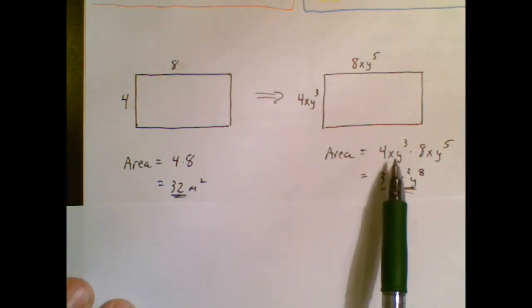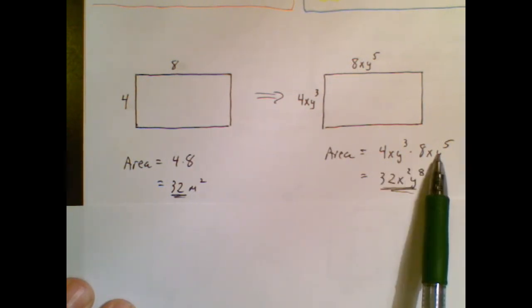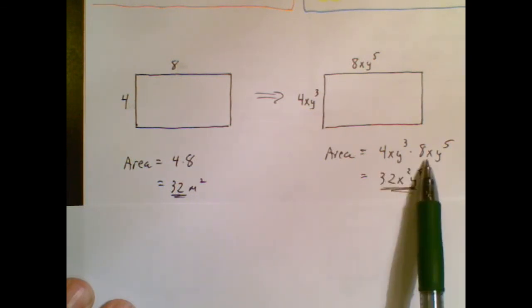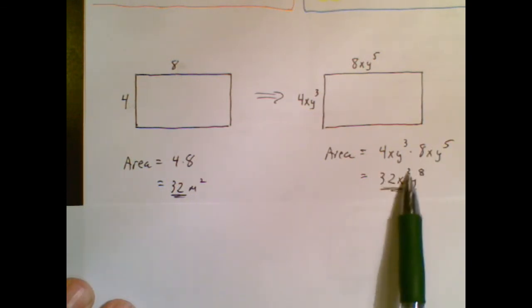But you simply say side times side and now you've in this case follow your rules for multiplication. Multiply your coefficients add your exponents x to the first x to the first they add to x to the second and this y exponent and this y exponent add to 8.